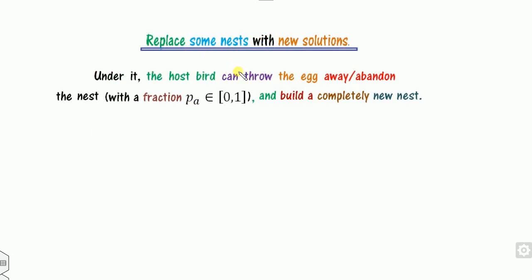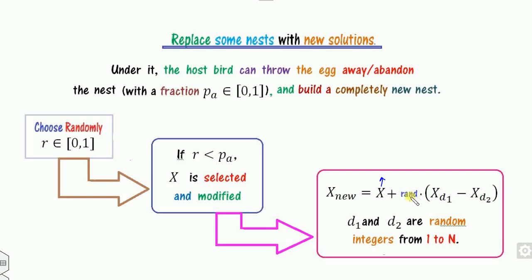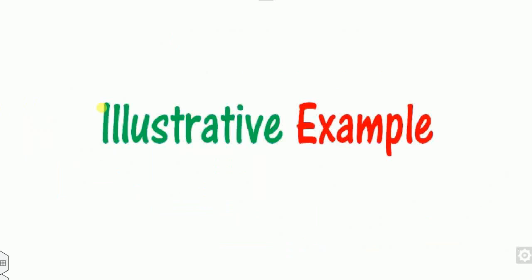The second phase replaces some nests with new solutions — either throwing away or abandoning. Instead of throwing away the whole nest, a fraction pa is chosen, typically set to 0.25. To generate a new solution, a random number between 0 and 1 is generated and checked whether it is less than pa (the assigned probability). If satisfied, a new solution is generated as x_old plus a random number times the difference between two randomly selected solutions from the population.